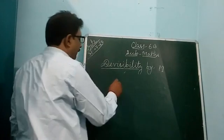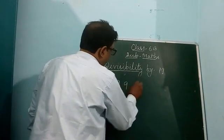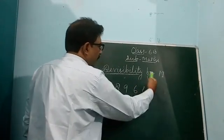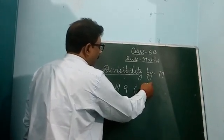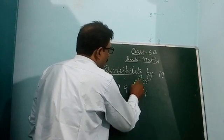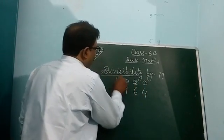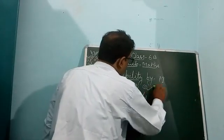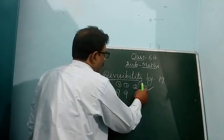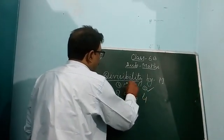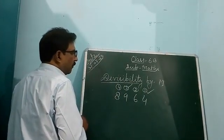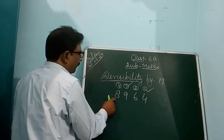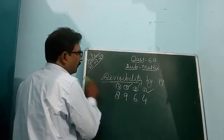I am taking 8,964. Firstly, from the right side — from the ones place — you count as 1, 2, 3, and 4. You identify the odd and even number positions. Add the 1st place number and 3rd place number — this is the odd place sum. And the 2nd place and 4th place numbers are the even place positions.